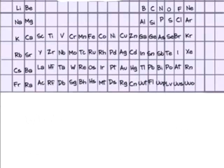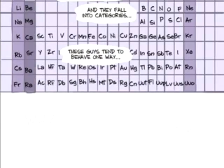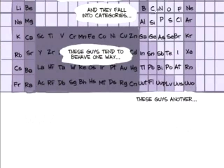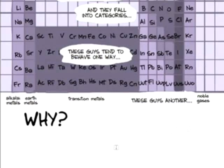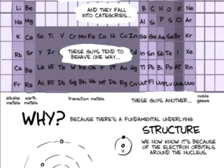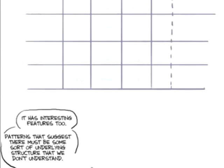We're looking for patterns. It's just like the periodic table. You take all the elements and you organize them by their characteristics, and they fall into categories. And these guys over here tend to behave one way, these guys tend to behave another way. Why? Because there's a fundamental underlying structure. And now we know it's just electron orbitals around nuclei. So we have a periodic table of the fundamental particles, and we've been putting it together and trying to organize it by the characteristics of the particles. And it has some interesting features. It has patterns which suggest there must be some sort of underlying structure that we don't understand, but we haven't seen it yet.